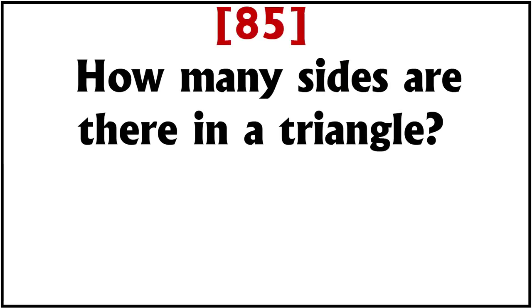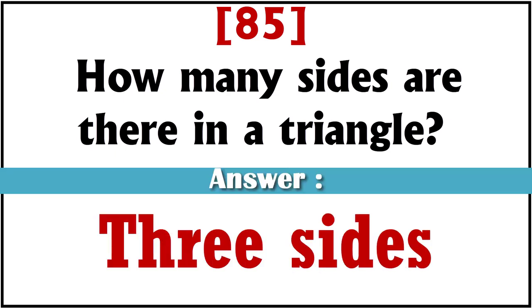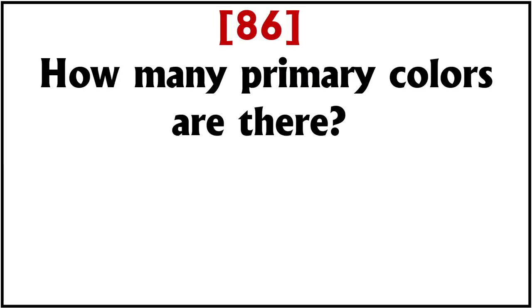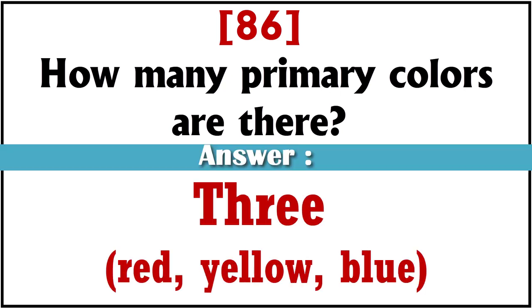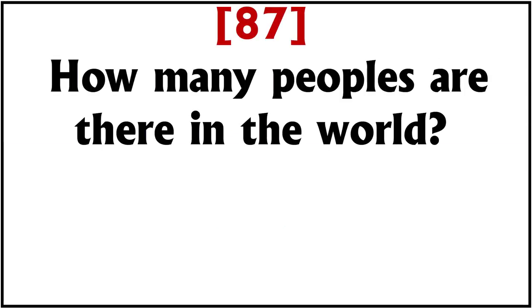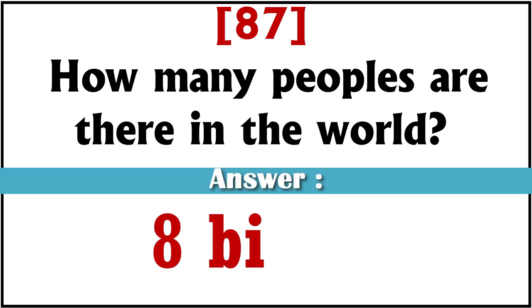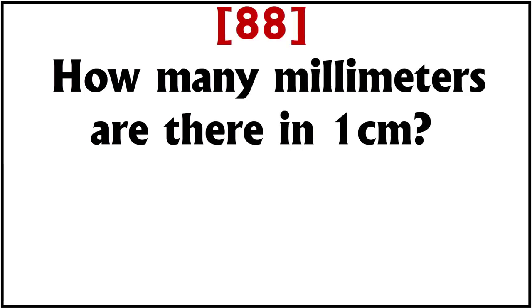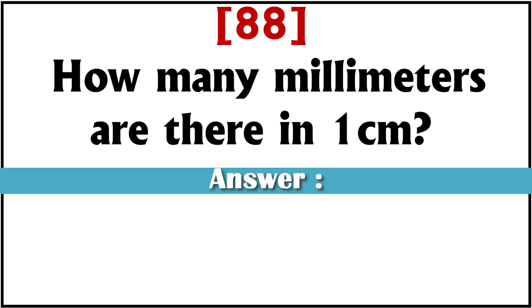How many sides are there in a triangle? Three sides. How many primary colors are there? Three: red, yellow, blue. How many people are there in the world? 8 billion. How many millimeters are there in one centimeter? 10.